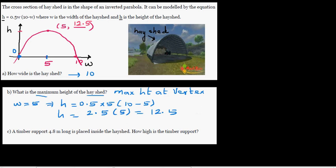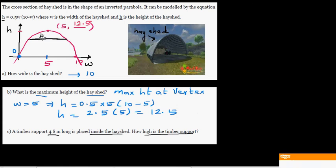Now the next question is: a support of 4.8 meters long is placed inside the hayshed. How high is the timber support? This width is 10. So you're putting a support like this, 4.8 meters. The question is what is this height? We can find this height if you can find the X coordinate.